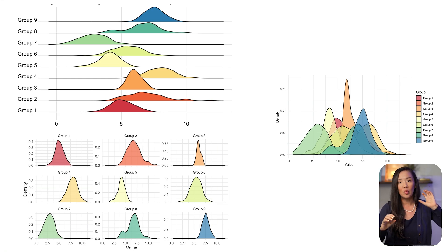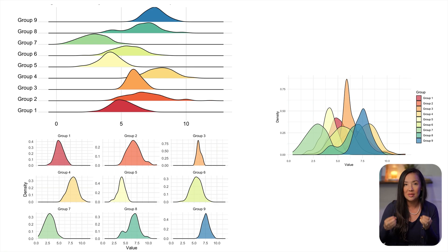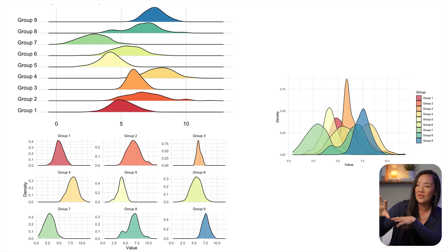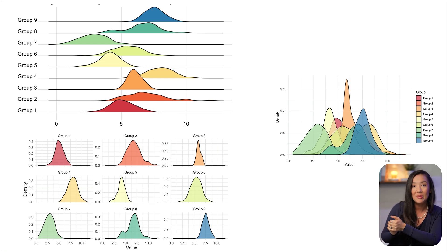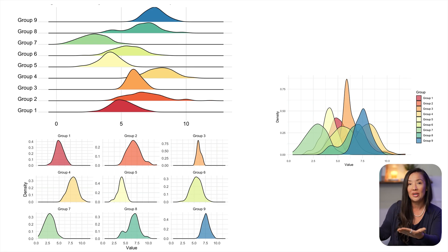Another approach is to simply break the density plots into different charts. This technique is called small multiples — you take individual groups and put each on a different pane of an image. It might seem complex, but the vast majority of research finds that small multiples is a very successful visualization technique compared to overlapping visualizations.